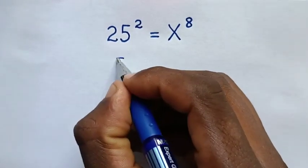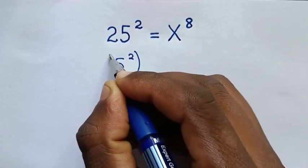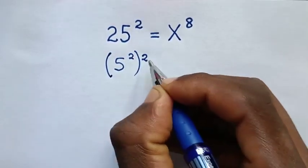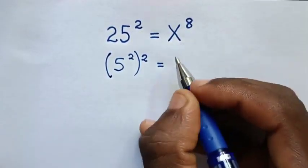Now, 25 is the same as (5²)², then is equal to x⁸.